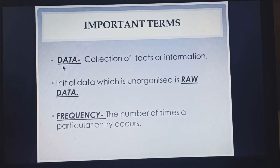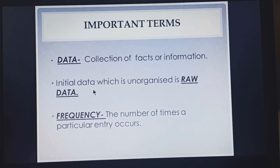Now first, what is data? Data is the collection of facts or information. The initial data which is given to us is unorganized, and this unorganized initial data is called raw data. The raw data we have collected is to be arranged in a systematic order, like we have done in a frequency distribution table.